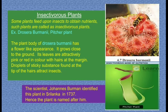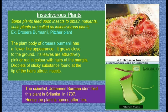Next are insectivorous plants. Some plants feed upon insects to obtain nutrients; such plants are called insectivorous plants. Examples: Drosera burmanni and pitcher plant. The plant body of Drosera burmanni has a flower-like appearance, grows close to the ground, and its leaves are attractively pink or red in color with hairs at the margin. Droplets of a sticky substance at the tip of the hairs attract insects. The scientist Johannes Berman identified this plant in Sri Lanka in 1737; hence the plant is named after him.